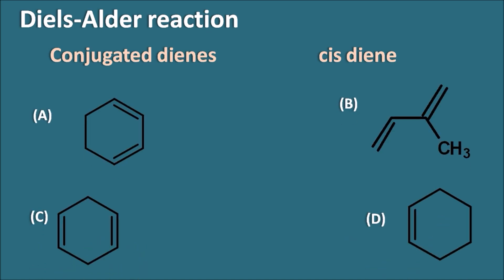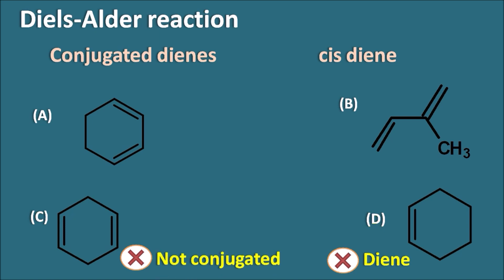Looking at the options: option D is a monoalkene, not a diene, so it cannot undergo the Diels-Alder reaction — option D is wrong. Option C is also wrong; even though it is a diene, it is not a conjugated diene. The Diels-Alder reaction is shown by conjugated dienes only, so option C is eliminated.